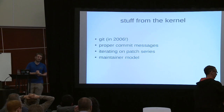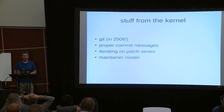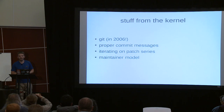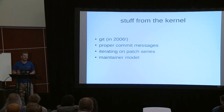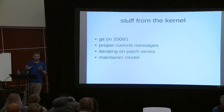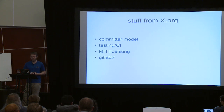We also adopted the entire approach of iterating on a patch set for developing features. Another thing graphics people took over from the kernel is the maintainer model — the benevolent dictator model. DRM was run like this, the X server was run like that, Wayland was run like that. We adopted that model quite a bit.